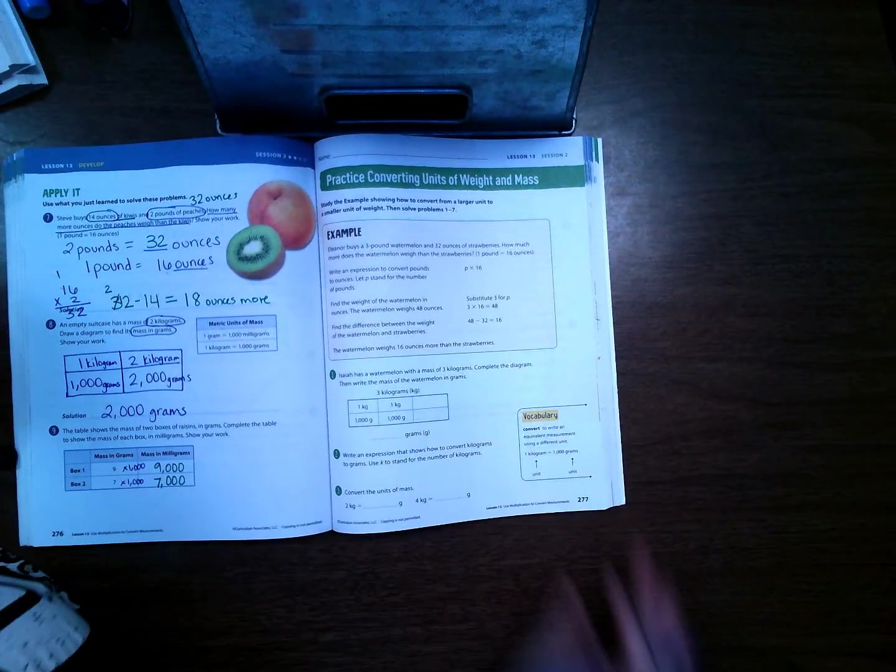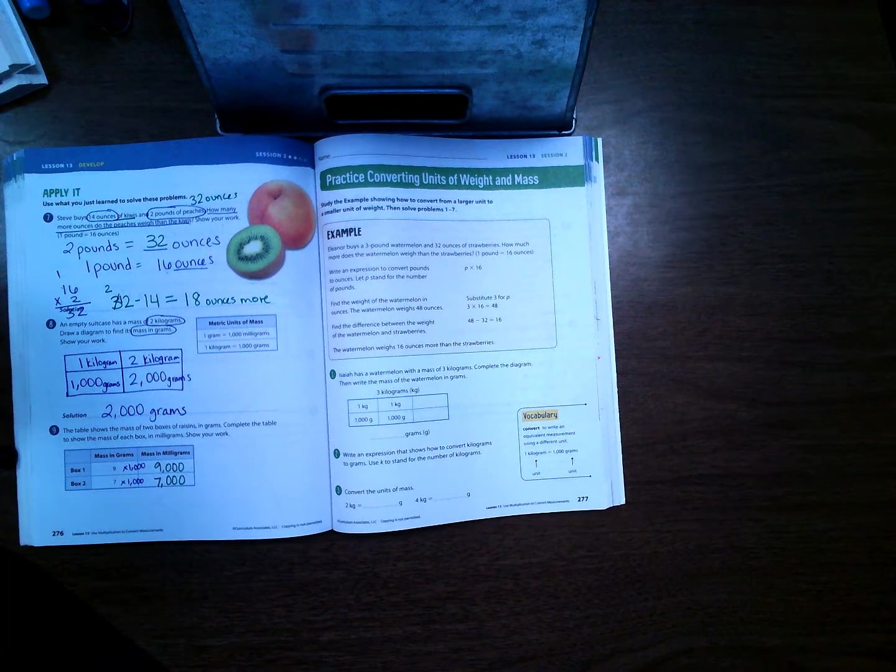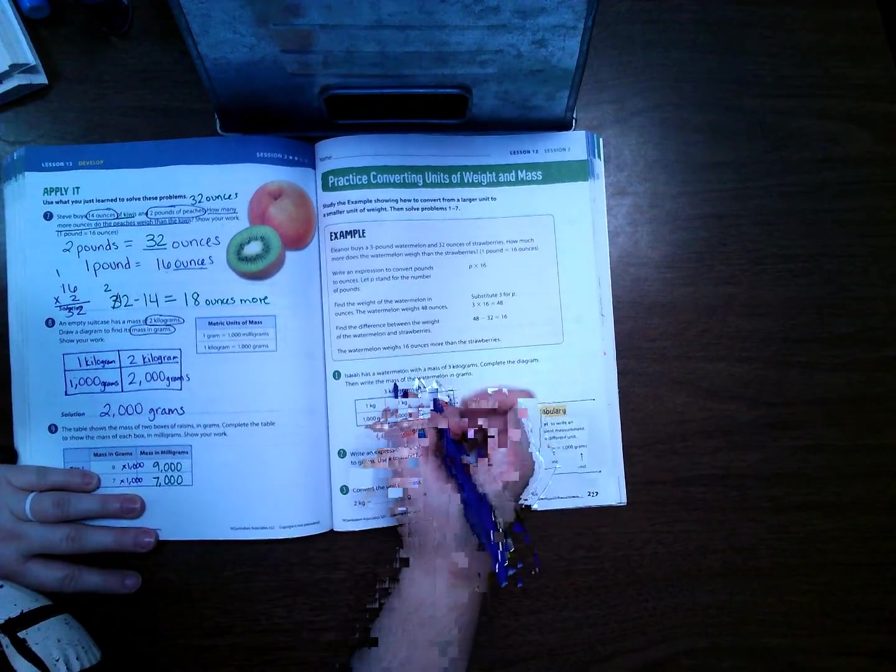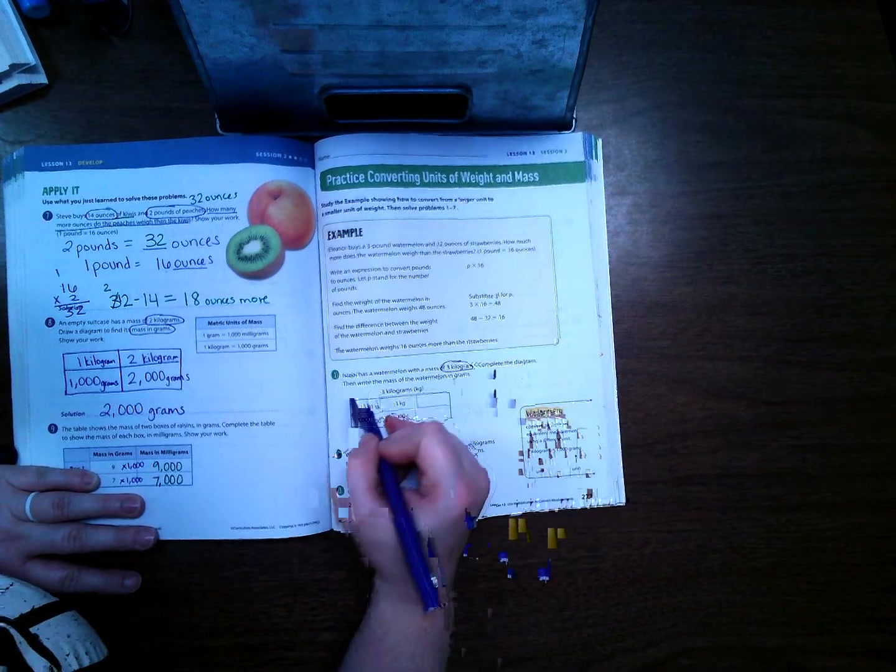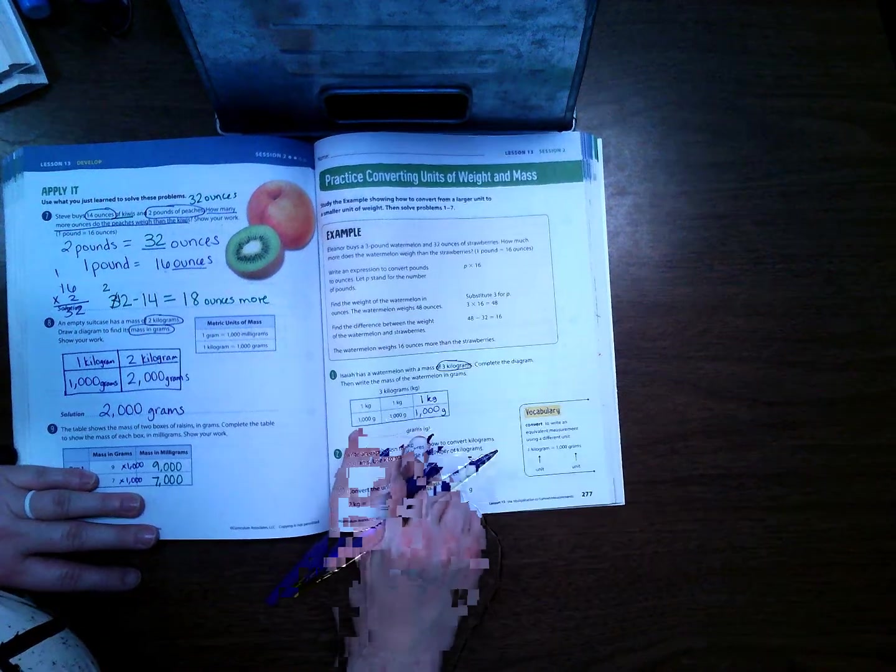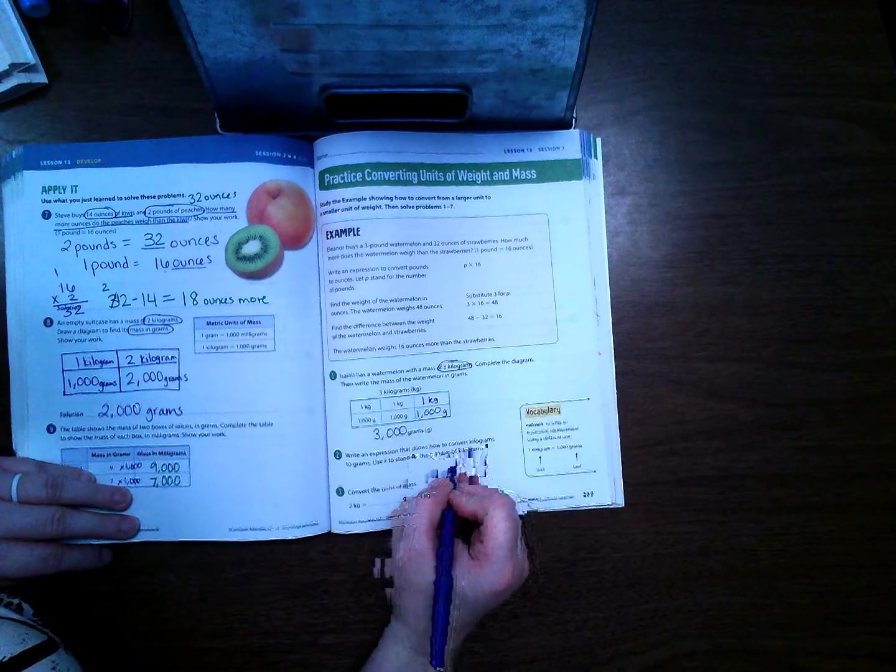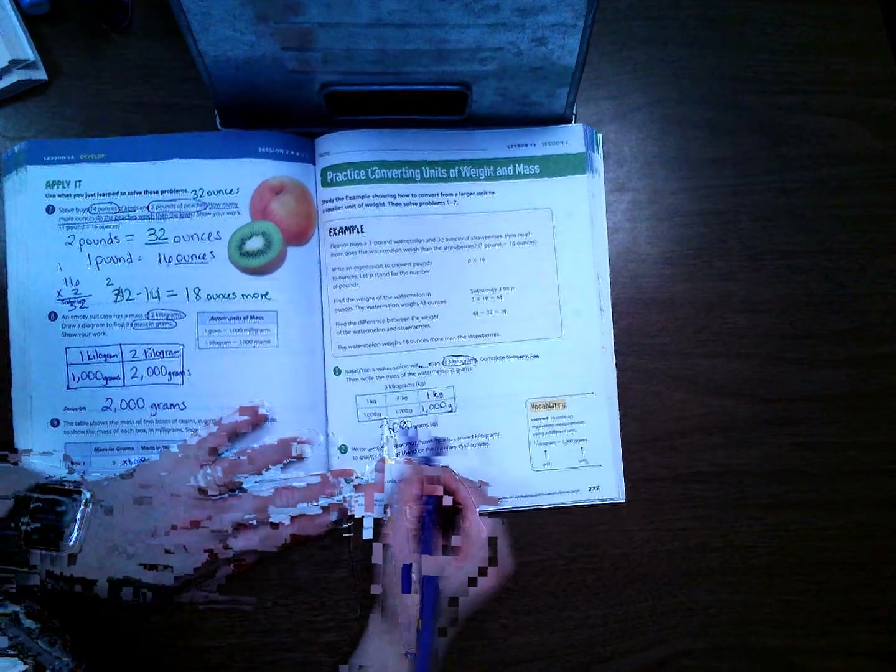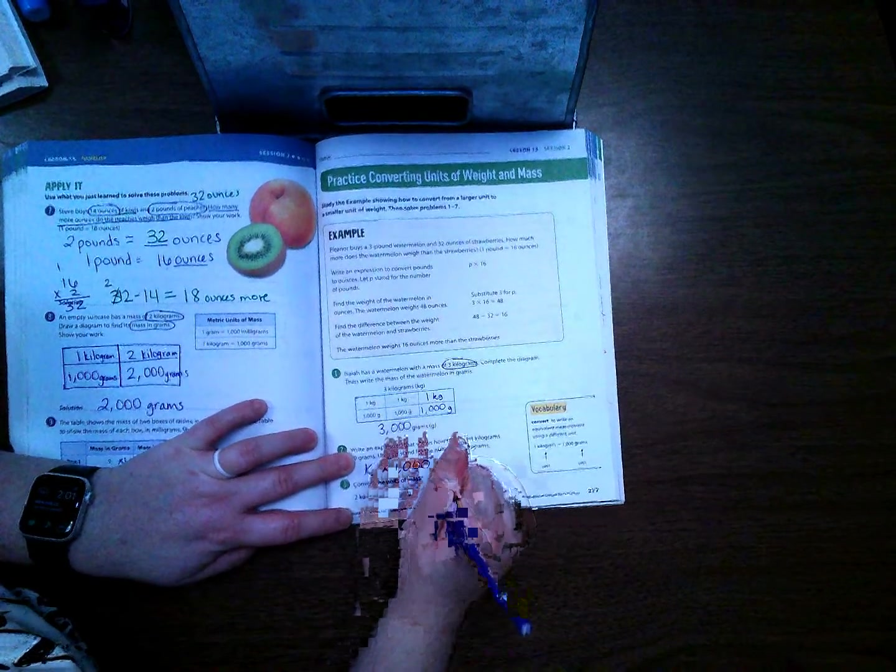If you're starting to get the hang of this, go ahead and work on 277 and 278 on your own. If you're still feeling a little lost, then go ahead and follow along with me. Isaiah has a watermelon with a mass of 3 kilograms. Complete the diagram then write the mass of the watermelon in grams. On this chart we see it's doing 1 kilogram is 1,000 grams. If we add these together, 1,000 plus 1,000 plus 1,000, that's 3,000 grams. Write an expression that shows how to convert kilograms to grams, use k to stand for the number of kilograms. So we multiplied by 1,000 to get this, so it would be k times 1,000 would equal our answer.